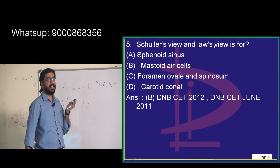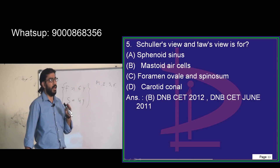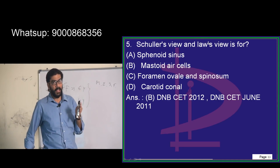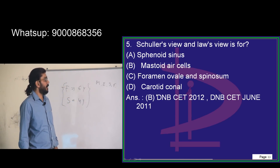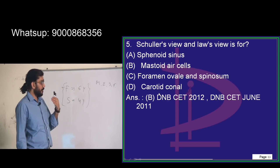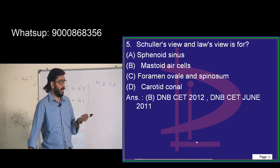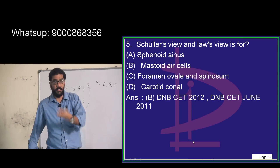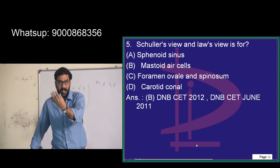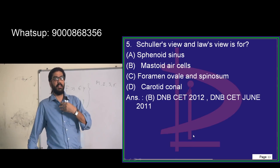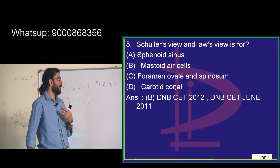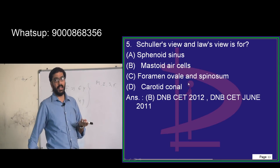Law's view can be called lateral oblique view — LOV. Schüller's view is lateral oblique view. The carotid canal and jugular bulb: the carotid canal is anterior and inferior to the middle ear, and posterior inferiorly you can have the jugular bulb as a boundary. Foramen ovale and spinosum — ovale and spinosum.